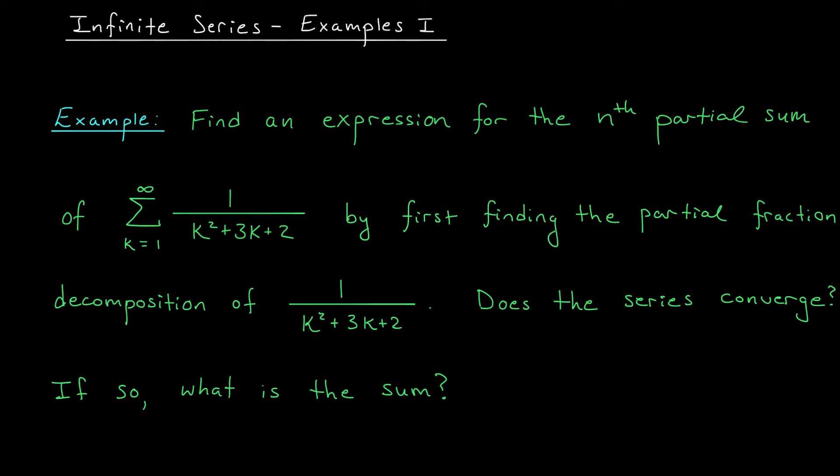If those partial sums approach some finite real number S as n tends to infinity, we'll say that S is the value of our infinite series. We say that the infinite series converges to S. If instead the partial sums go off to infinity, minus infinity, or don't approach any finite value, then we'll simply say that the series diverges.